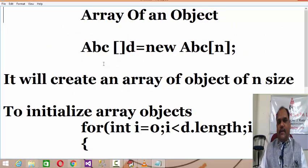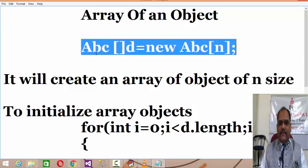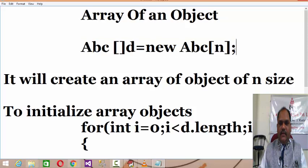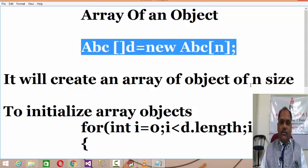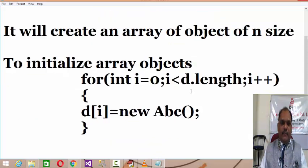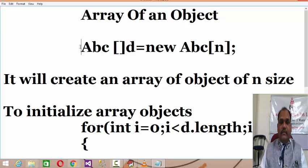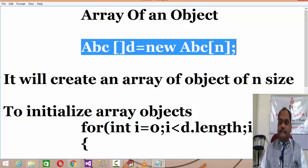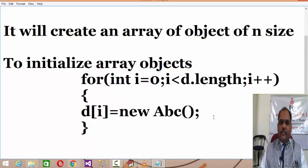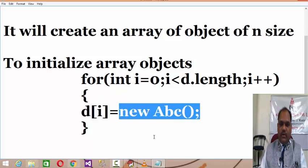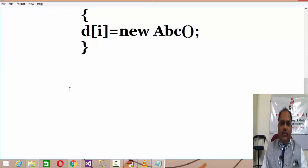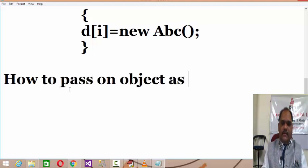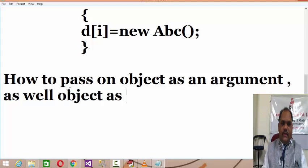While creating an array of objects, first you make a declaration like: abc[] t = new abc[n] — this creates an array of n size. By just declaring the array, all objects are not initialized, so we need a loop from zero to n to initialize each individual object. Now in today's session we'll be discussing how to pass an object as an argument as well as object as a return type.